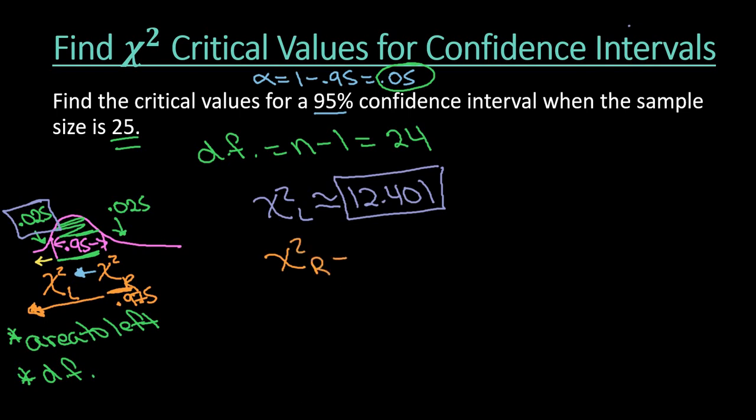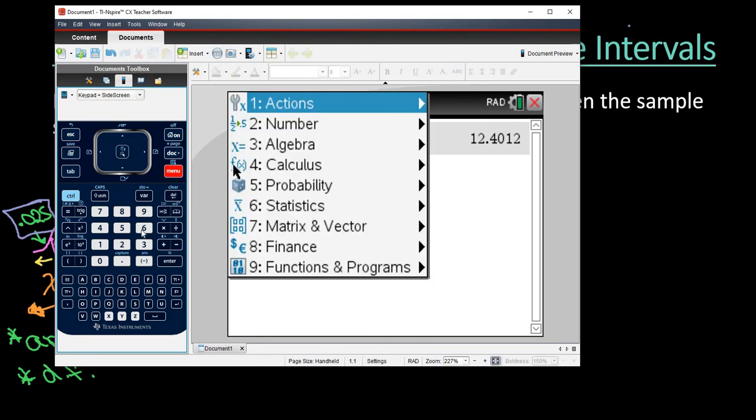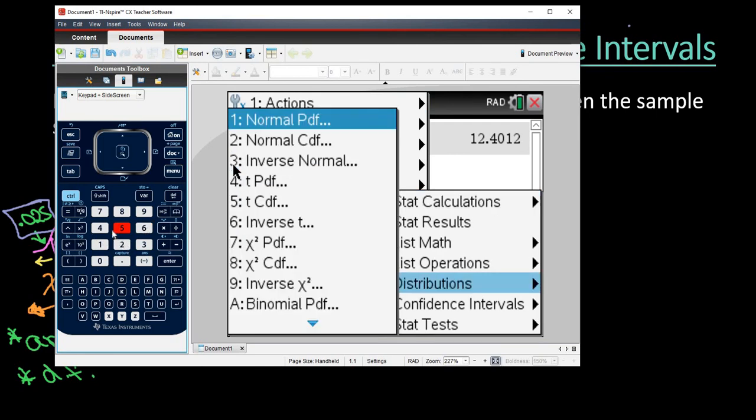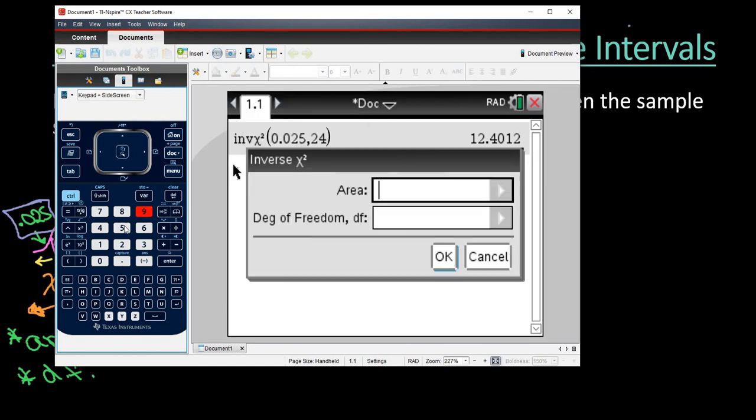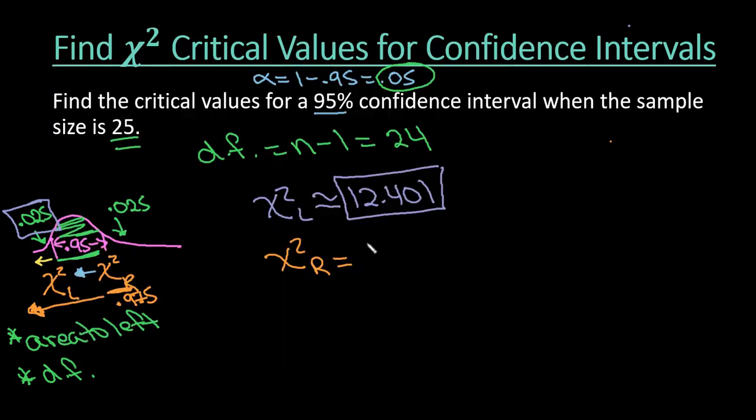So now to find the right side, I would just go back in, and instead of putting in 0.025, when I go to the menu and statistics, and then my distributions, I would go down to the inverse chi, which we said was nine, and our area would be 0.975. And my degrees of freedom are 24. And then I would just hit enter. I could have also just copied this one up there and changed it to 0.975. That might be easier. And I get 39.364.